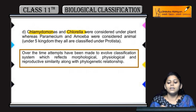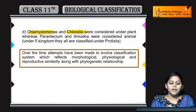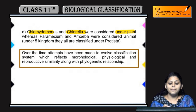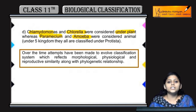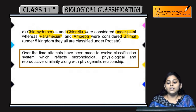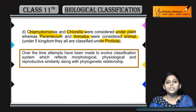Chlamydomonas aur Chlorella ko unhone rakha under plant kingdom, aur Paramecium aur Amoeba were considered as animals — though agar aap aaj ka classification system dekhen, then they are under Kingdom Protista, as those are unicellular eukaryotes.